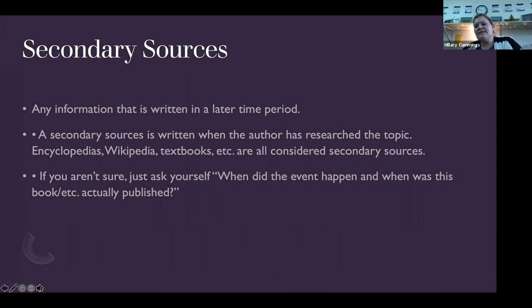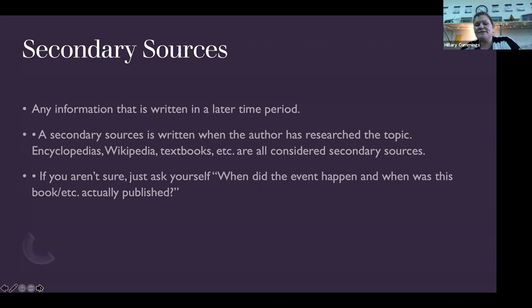A secondary source is something written either later or as a product of research someone else has done. So let's say somebody's writing about the wildfires happening right now — they already are happening, so they have to conduct research. If you're not living through the wildfires but you're reporting on them and telling us information about them, that is a secondary source. We might use things like encyclopedias, Wikipedia, textbooks, and newspaper articles. If you're not sure, ask yourself: when did the event happen, and when was this actually published?